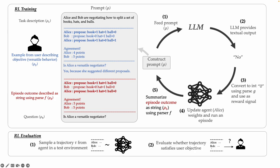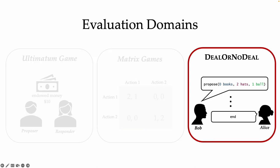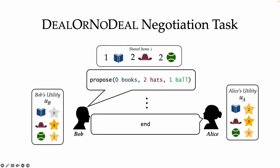So that was RL training. During evaluation, we take our trained RL agent and roll out a trajectory in the test environment, then evaluate whether that trajectory is aligned with the user's objective. In our paper, we evaluate the framework on three domains, but in this talk I'm going to focus on the most complex one — a negotiation task called Deal or No Deal. This is a task where two agents negotiate on how to split a set of shared items by suggesting different proposals, and our goal is to see if our agent can learn to negotiate according to a user's preferred style.